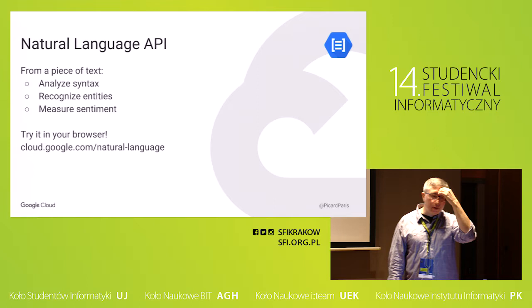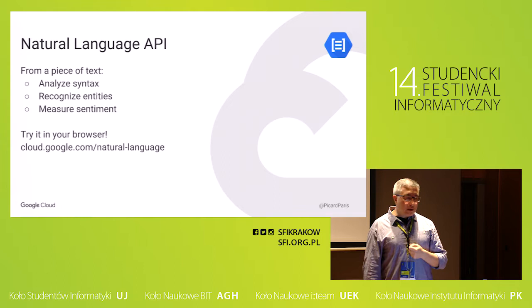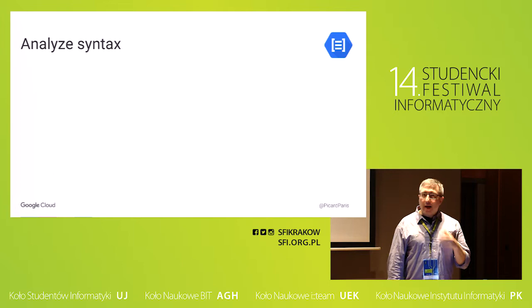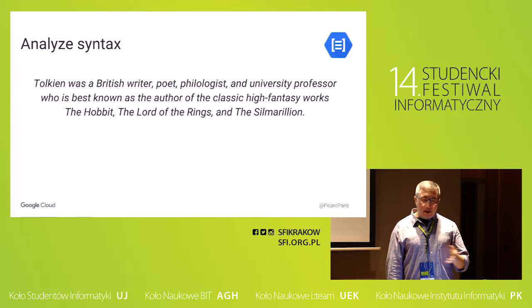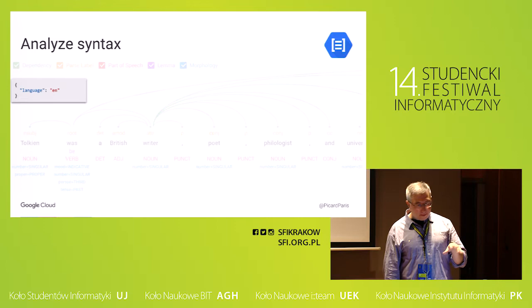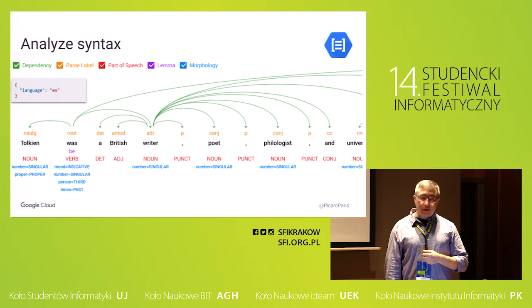The first API we'd like to talk about is the Natural Language API. The input you provide is text, and from this text you can get pretty useful insights: you can get the syntax, you can get the entities, and you can recognize the sentiments. For example, I took the English sentence 'Tolkien was a British writer' and so on. If I give this sentence to the Natural Language API, it recognizes that it's English, then gives me the types of different words and the relationships between them — verbs, nouns, adjectives. One feature I like very much is the lemmas — the canonical form of any word.